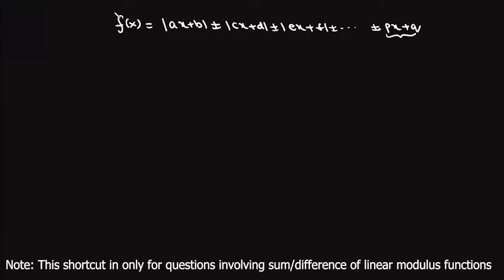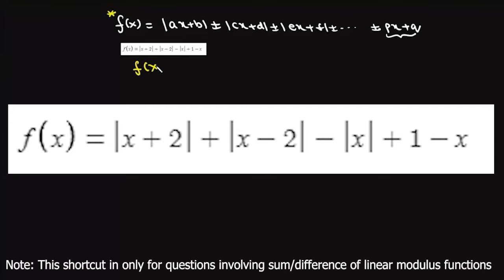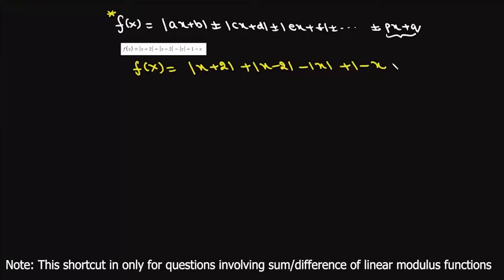Let us take up an example. This function f(x) is: |x+2| + |x-2| - |x+1| - x. We have to find something about this function which we will decide later. At this point we are only concerned with how to draw the graph of this function in a simple fashion.